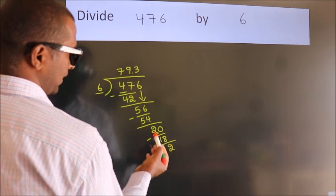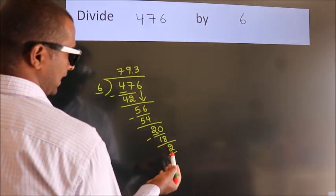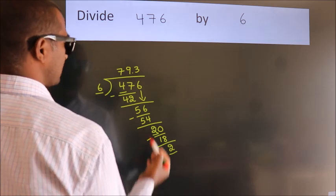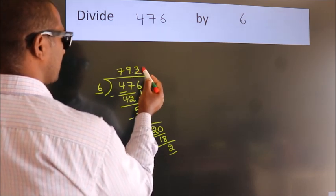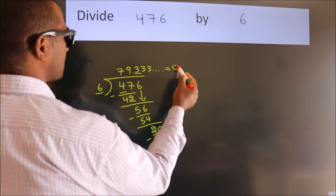We had 2 here, and we got 2 again. That means this number keep on repeating. So this is our quotient.